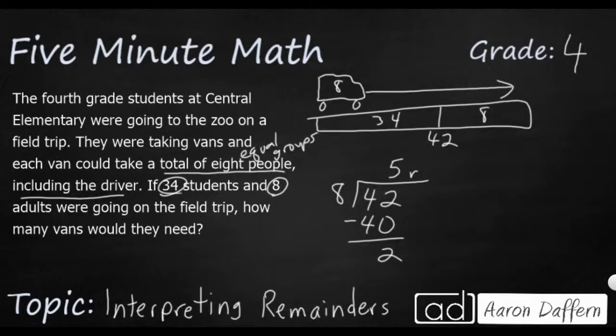Remember, the question is, how many vans would you need? And you can't order five remainder two vans. If you just get five vans, that's going to be enough for 40 people. And that's not going to be enough. Remember, we said we had 42 people. We can't just leave two people home. So in this case, our remainder says we're going to need to get a little bit above that. We're going to need to get six vans. And even though that's going to be 48 people, that's going to be enough to fit all of our people. So our answer is going to be six vans.